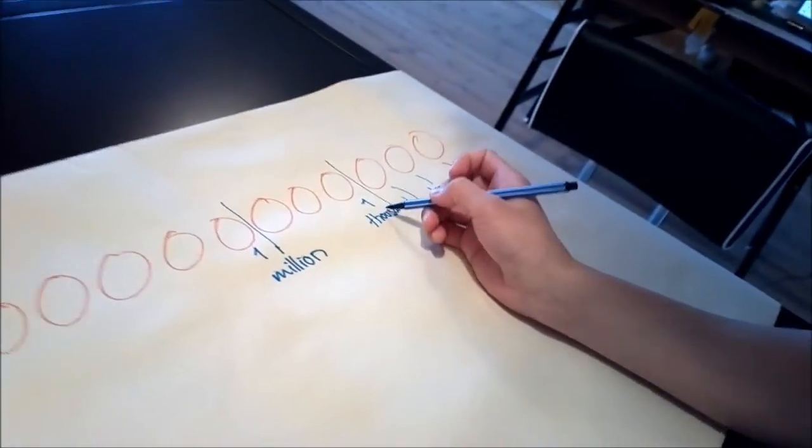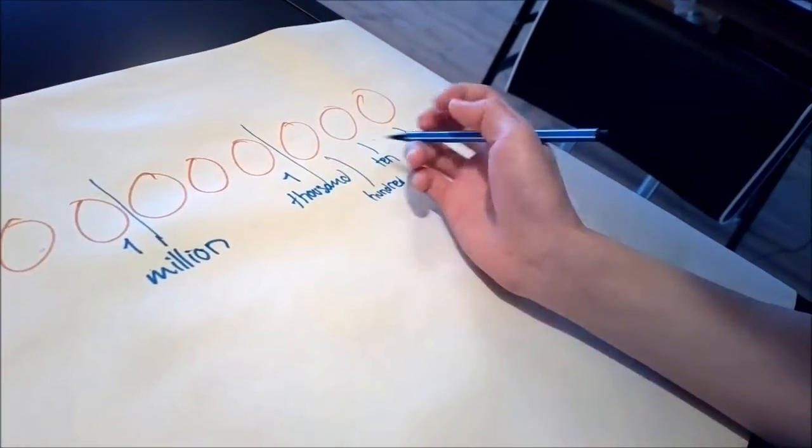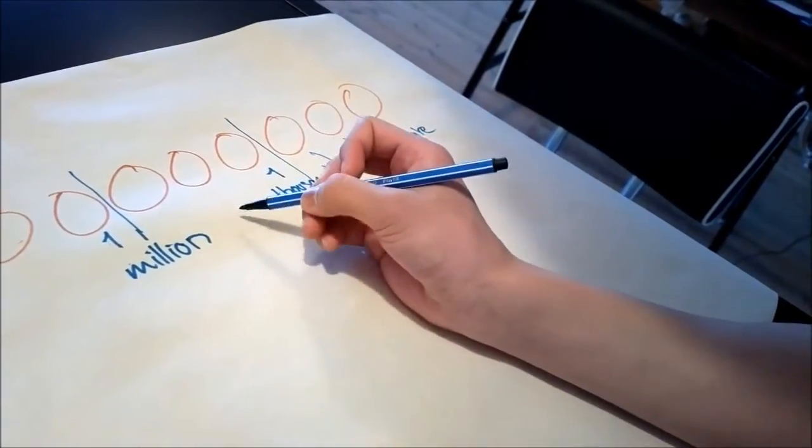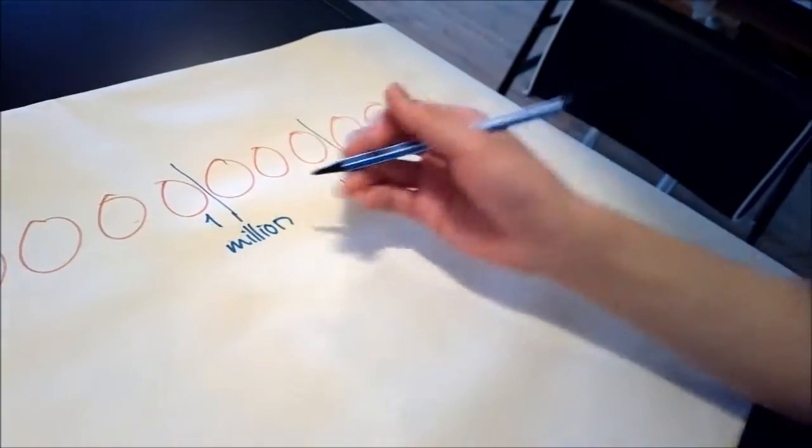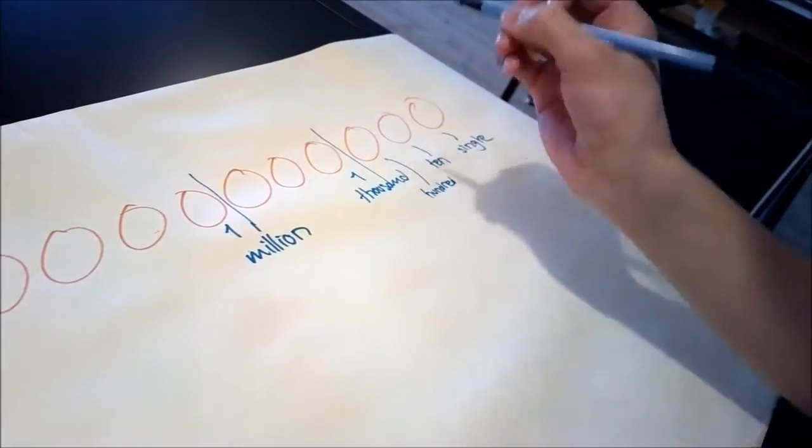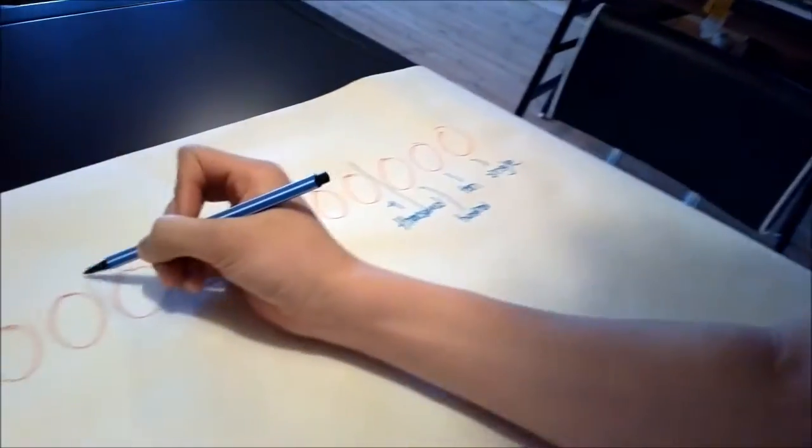So then over here you have a single thousand, and then here you have ten, so it would be ten thousand, and then one hundred thousand, so you get the point. You guys all know this stuff. So let's keep going.